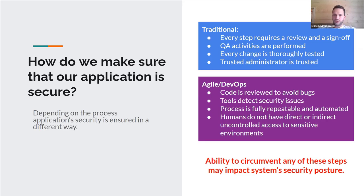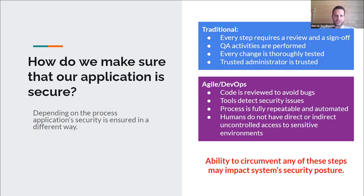We need to rely on the fact that code is reviewed so no unauthorized changes are introduced, that tools can detect security issues or developer mistakes, and that the process is fully repeatable so every build and deployment is exactly the same. Probably most importantly, humans should not have direct uncontrolled access to environments — if we want the process to be fully repeatable, we cannot introduce uncontrolled human intervention, because humans make things manual and there's a chance the process will be done differently.